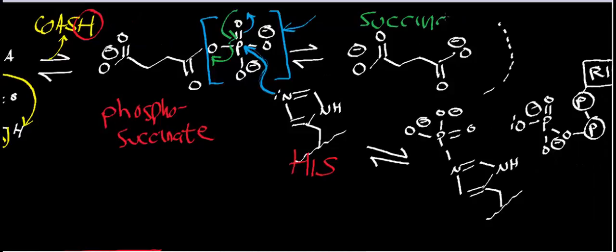Succinate is a terminal dicarboxylate, meaning that all terminal carbons have a carboxylate group, and it's four carbons long. Remember that in the alpha-ketoglutarate dehydrogenase complex, we reduced alpha-ketoglutarate to succinyl coenzyme A, and in that process we reduced it by one carbon from five carbons to four carbons. In this particular reaction, we're keeping the number of carbons constant — succinyl-CoA had four carbons, and succinate also has four carbons, excluding the coenzyme A.